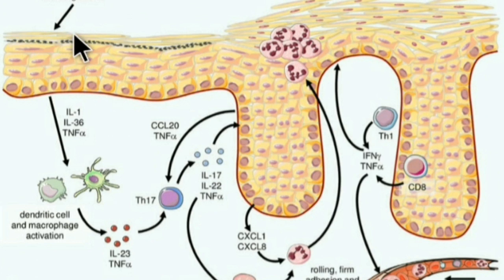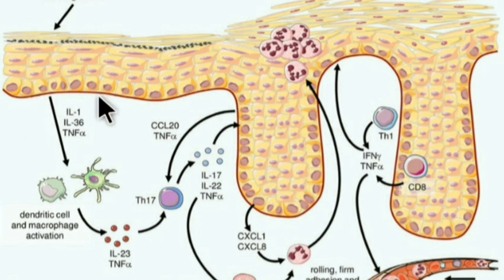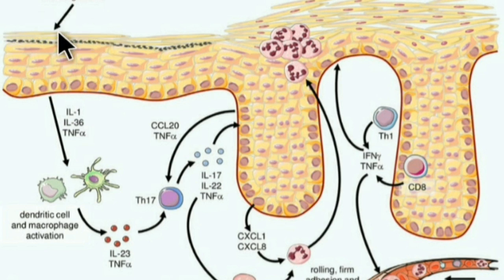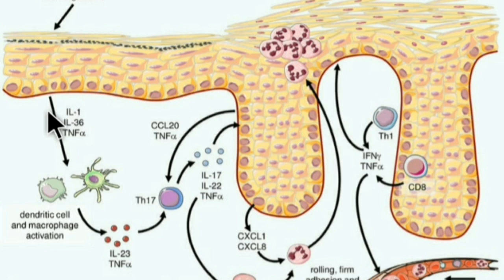In psoriasis, stress, drugs, trauma, smoking, or microorganisms can induce the immune response. Normally, there will be a good barrier function of the skin, which gets compromised in psoriasis, and it leads on to the activation of the immune system.